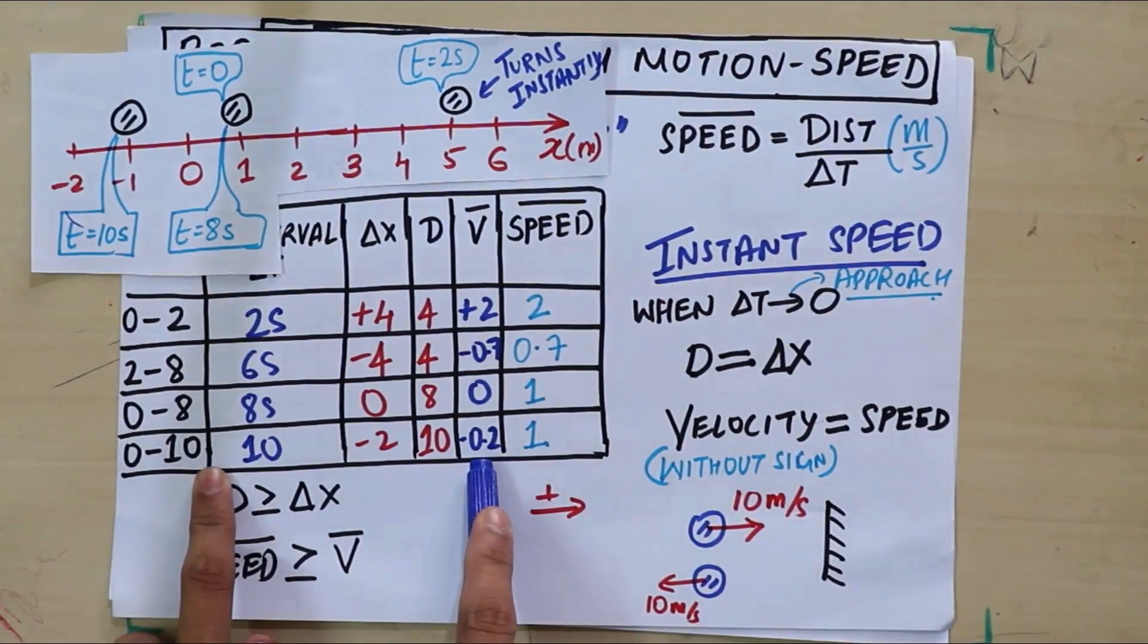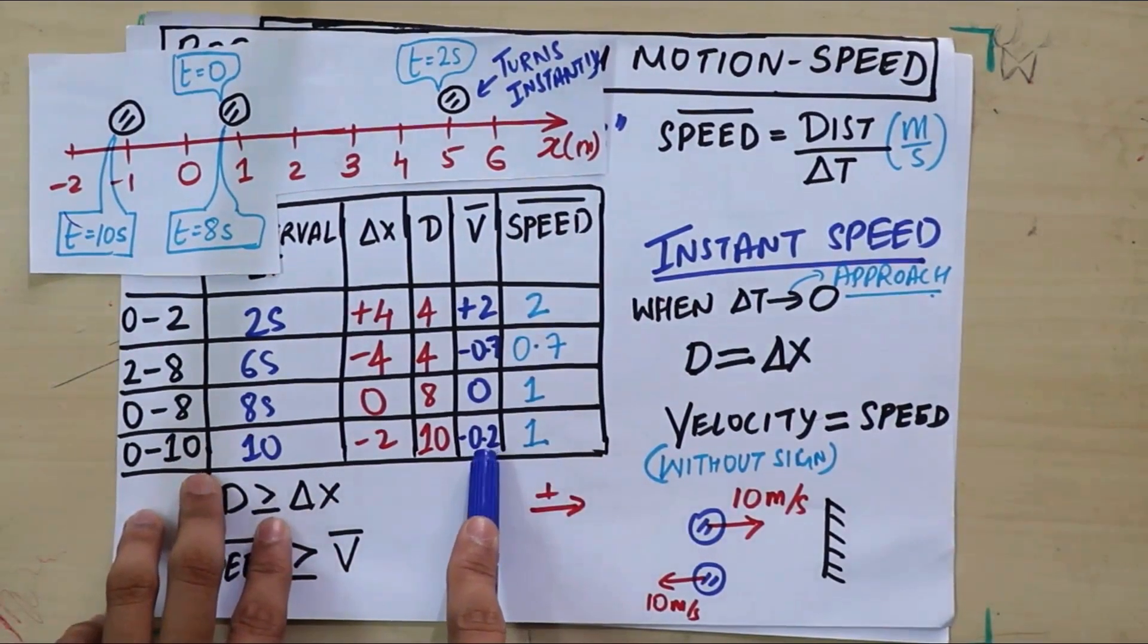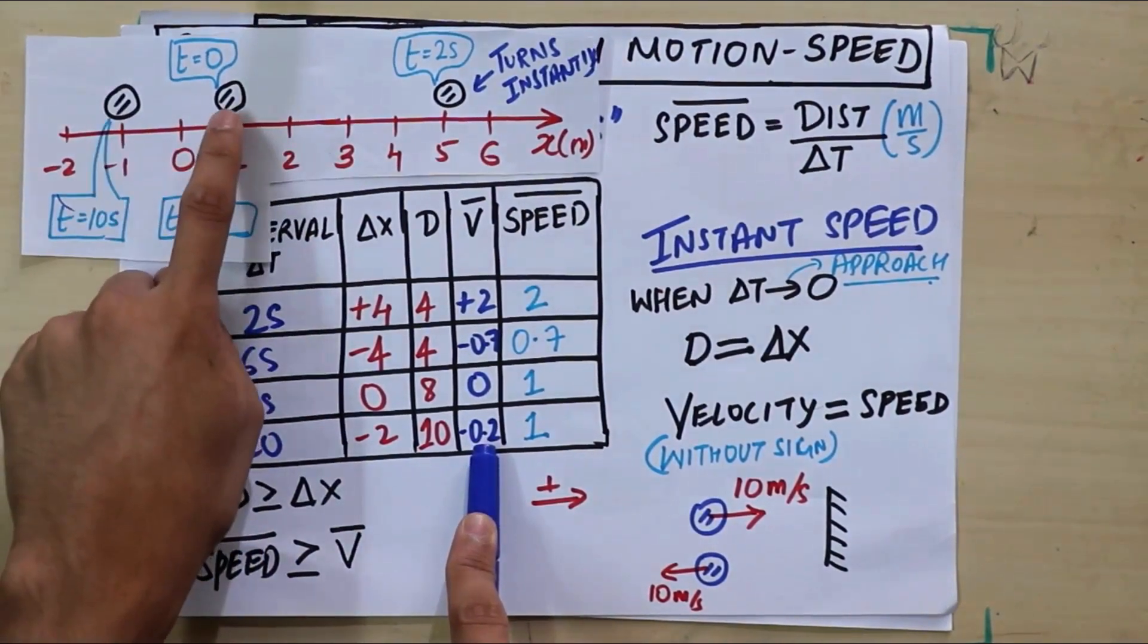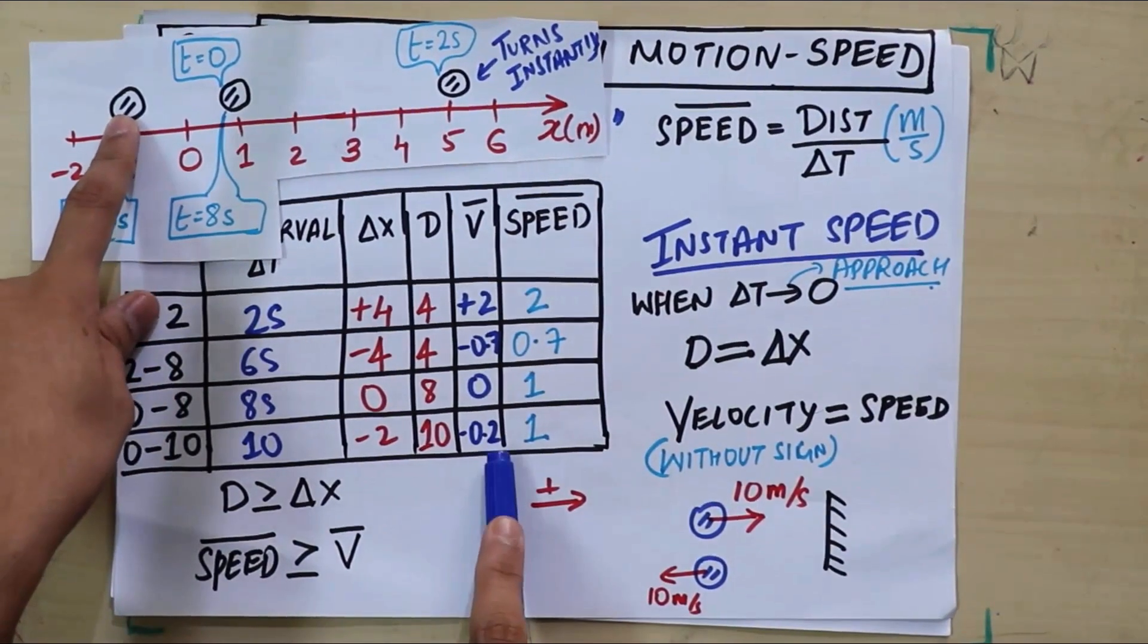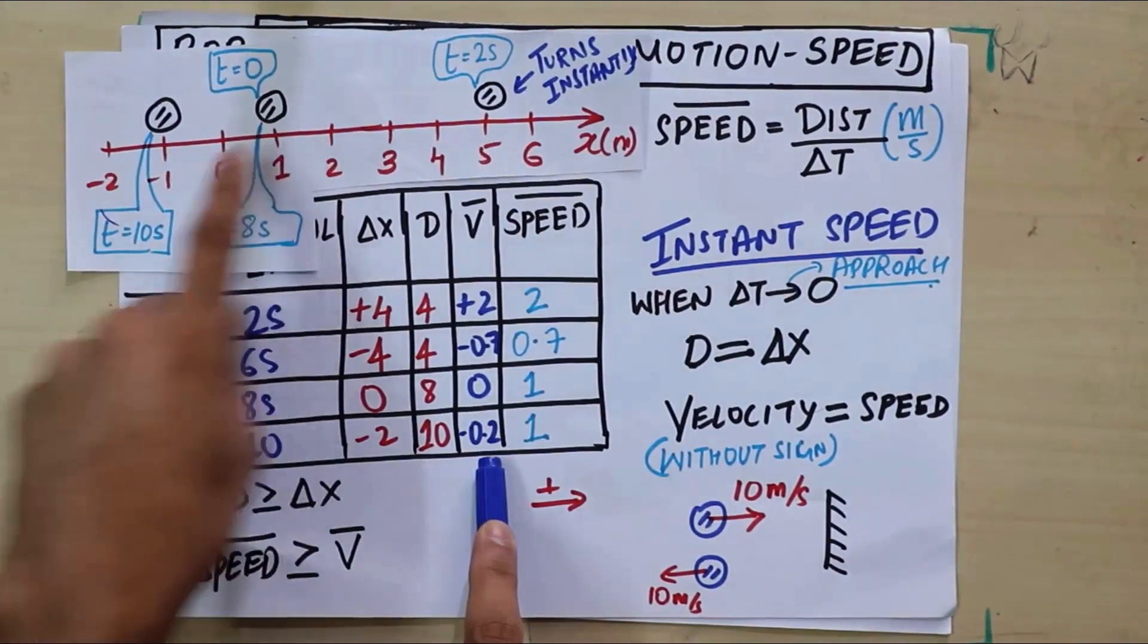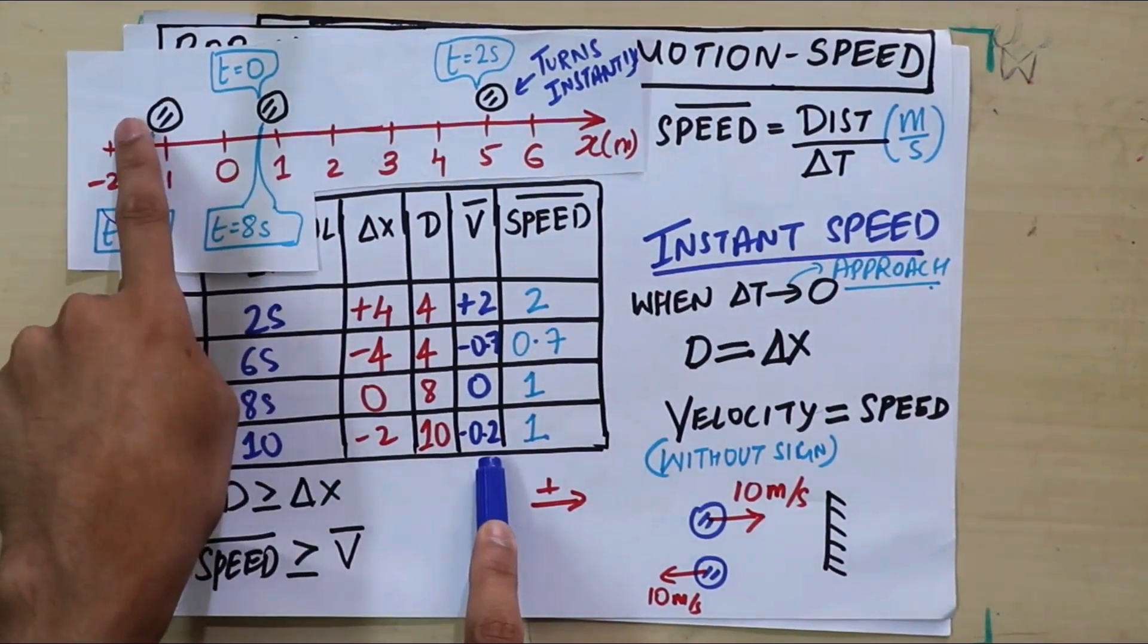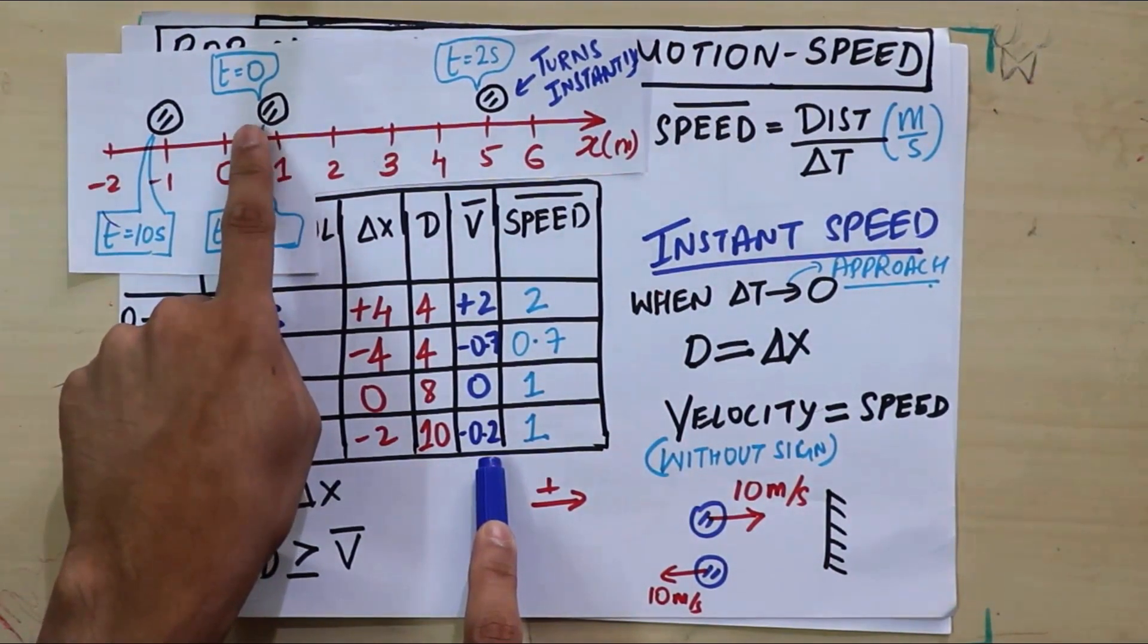the velocity, average velocity, is minus 0.2. Again, why is it called average? Because we assumed that he's going from here to here, he's changing his position from here to here uniformly. Can you see that assumption? That's why you're getting a small value of minus 0.2, because you're assuming that he's taking 10 seconds to move directly from here to here. So if you're doing it uniformly, he would have gone minus 0.2 in the first second, 0.2 in the